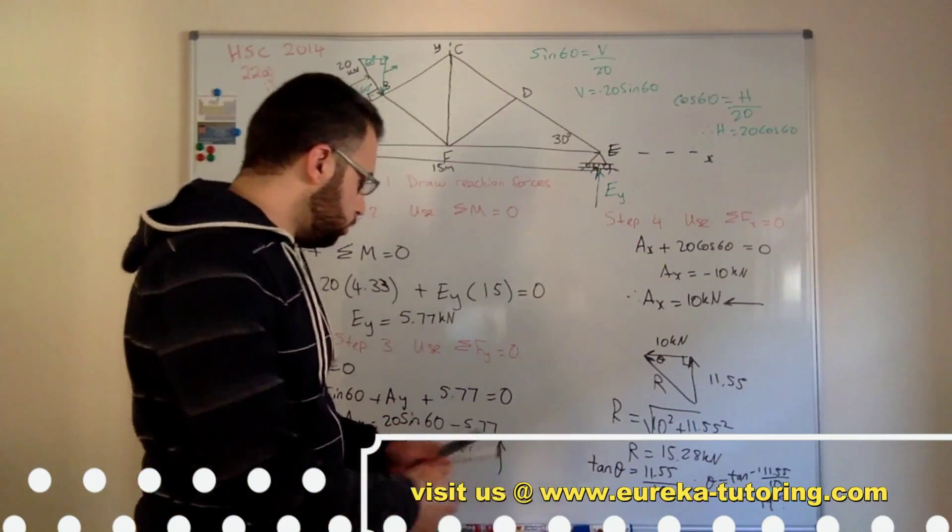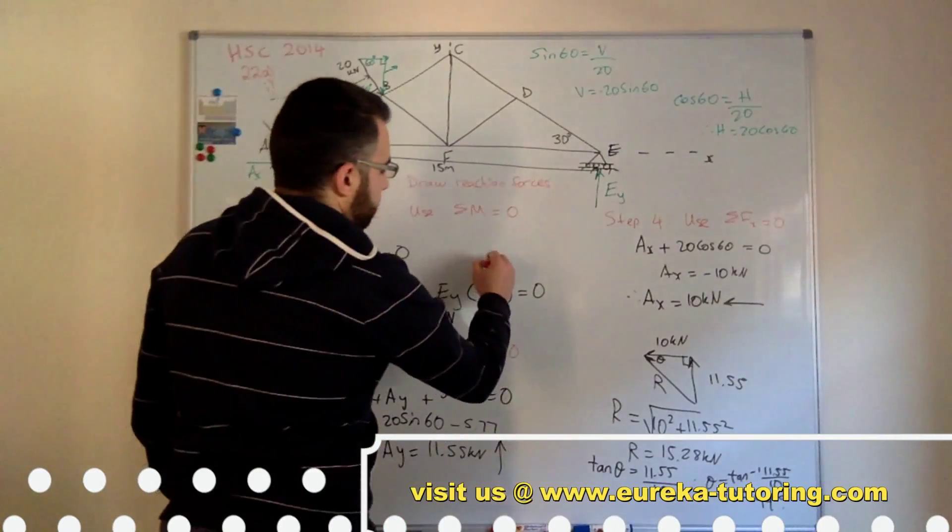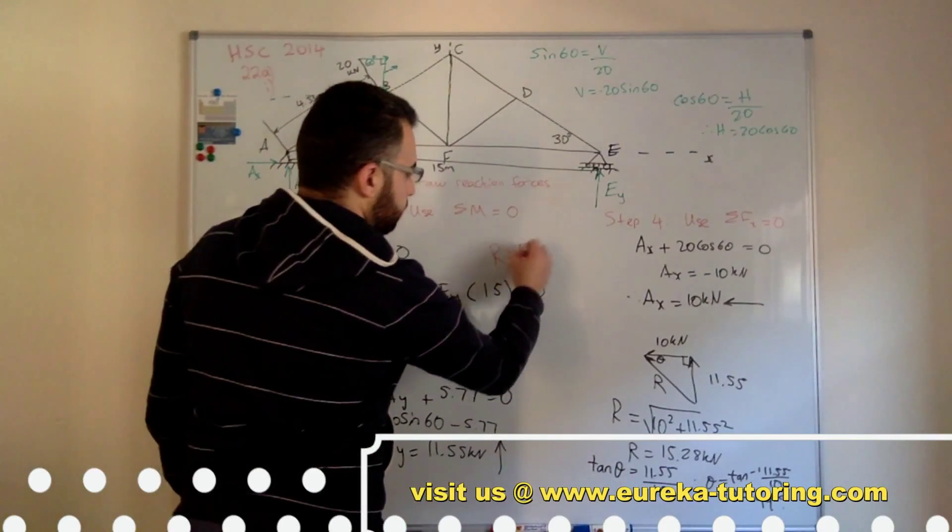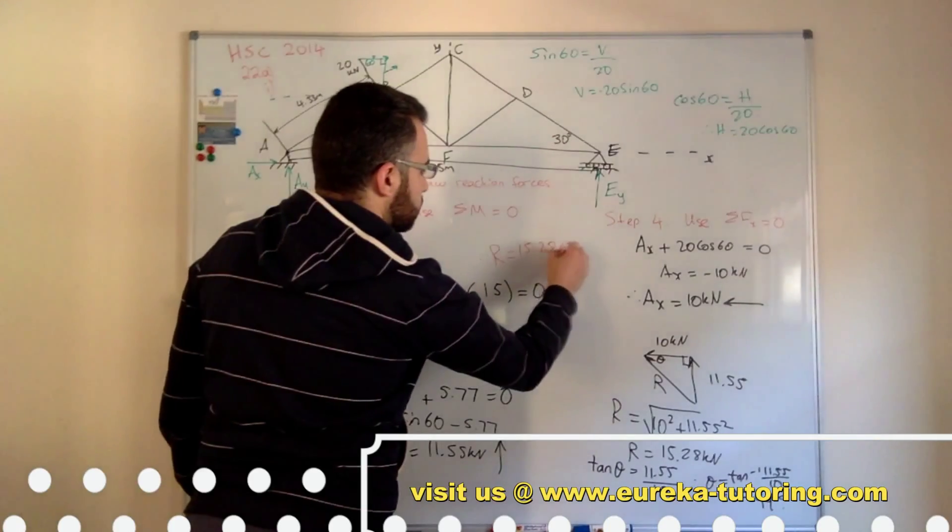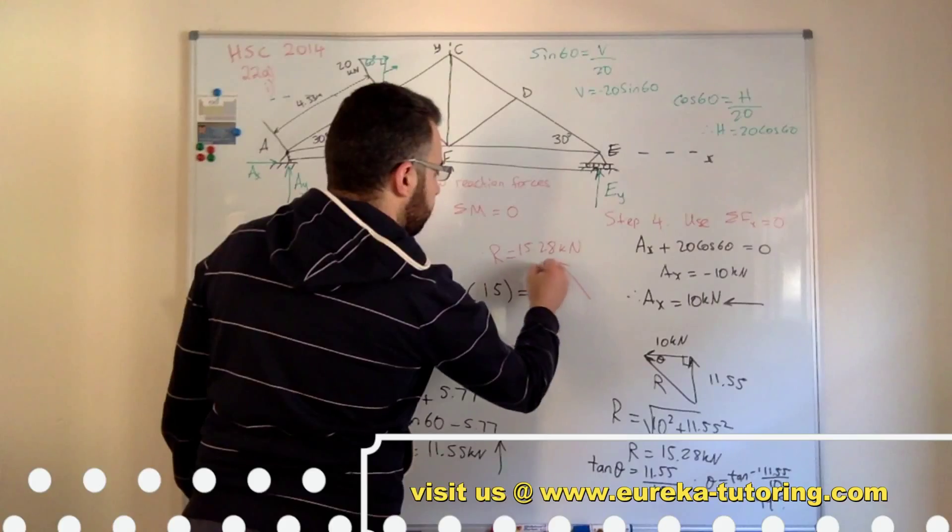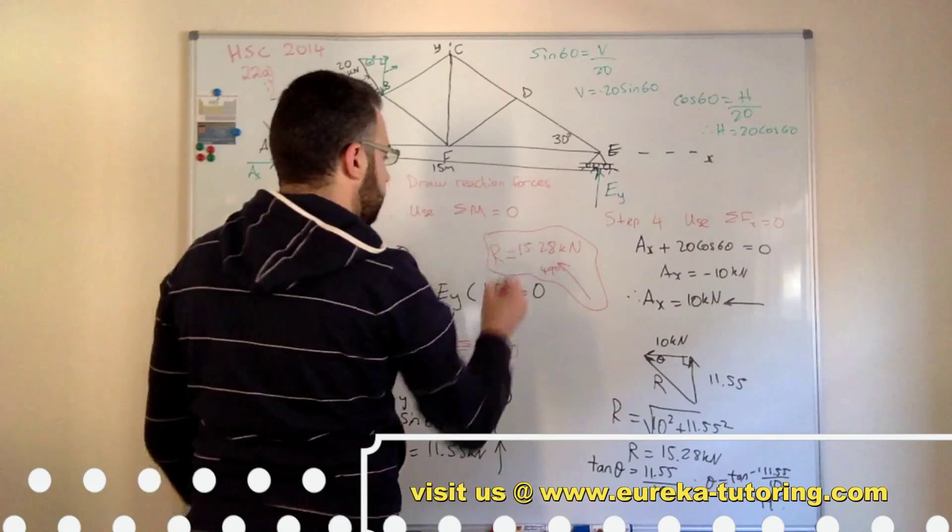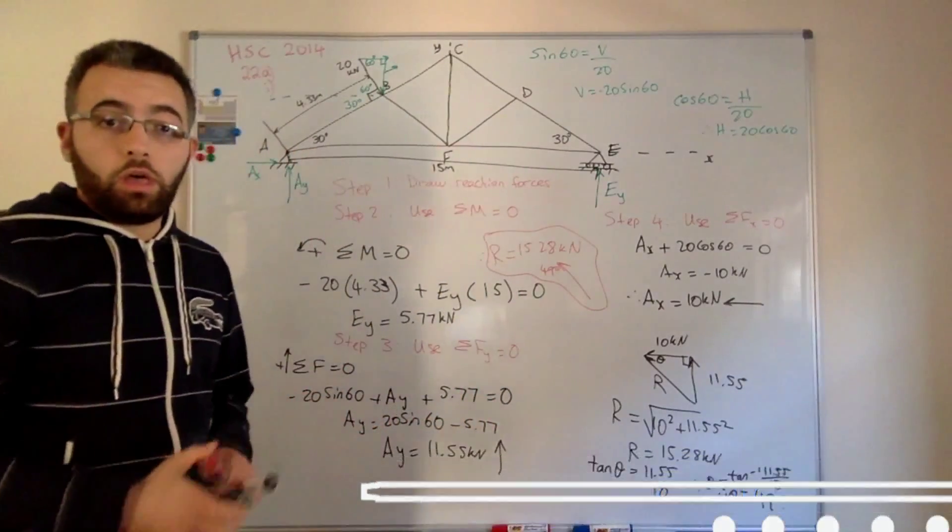So to conclude, our answers are: Therefore, R equals 15.28 kilonewtons, and the direction is going this way at 49 degrees. And there's your solution for part A, part I.